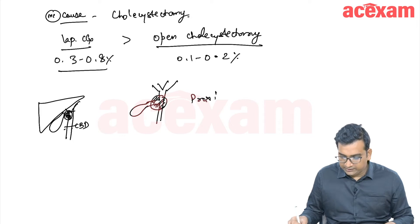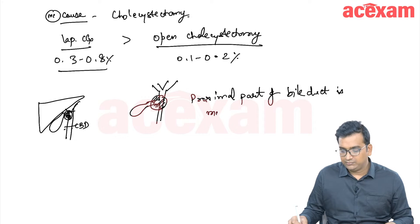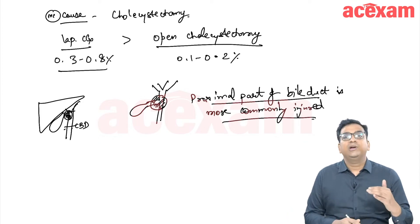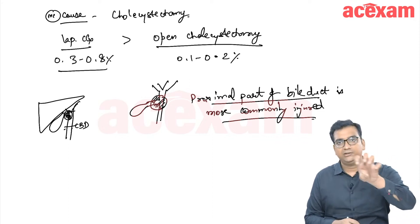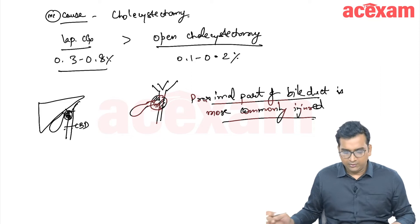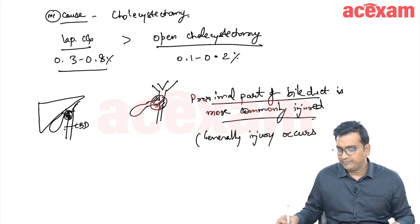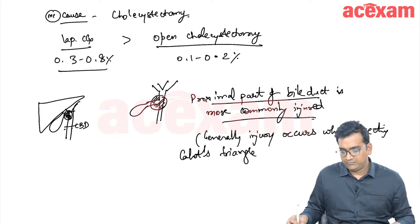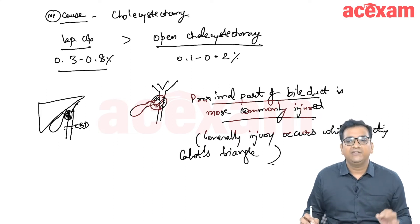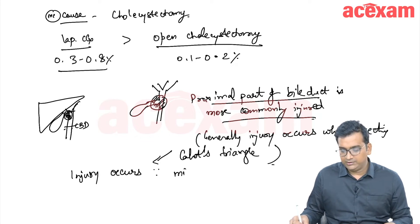For MCQ purposes, the proximal part of the bile duct is more commonly injured. The part associated with the gallbladder is more frequently injured as compared to the distal part. The injury generally occurs while dissecting Calot's triangle, because of misidentification of the structures.